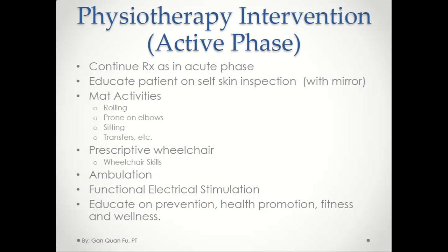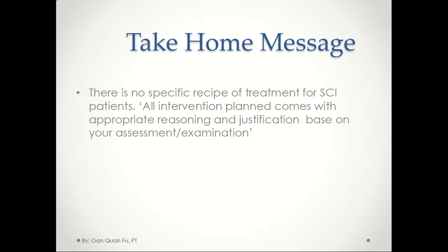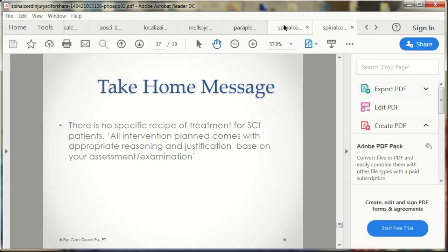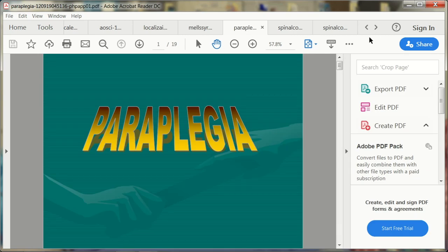The goal is to maximize functional independence — bed mobility, transfers, and wheelchair mobility. As the patient becomes stable they are discharged with braces or support devices. Post-acute phase includes activities like rolling, prone on elbows, and sitting tasks. Wheelchair ambulation function is addressed in the chronic phase. Electrical stimulation can be given to weak muscles. Patient education should cover prevention, health promotion, fitness, and wellness. Treatment is always individualized based on assessment, functional level, and available musculature.